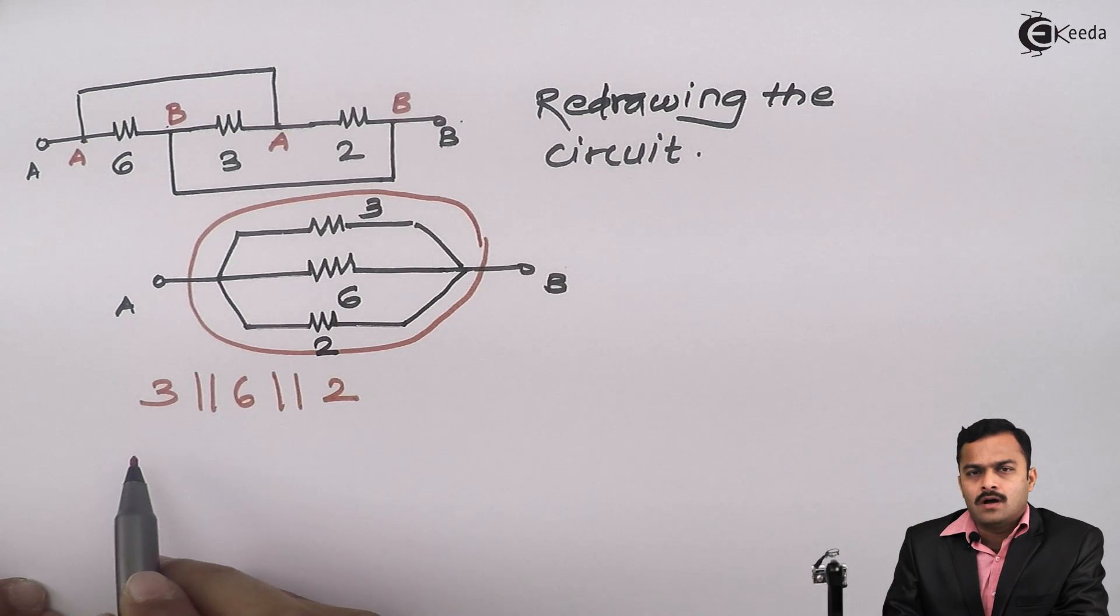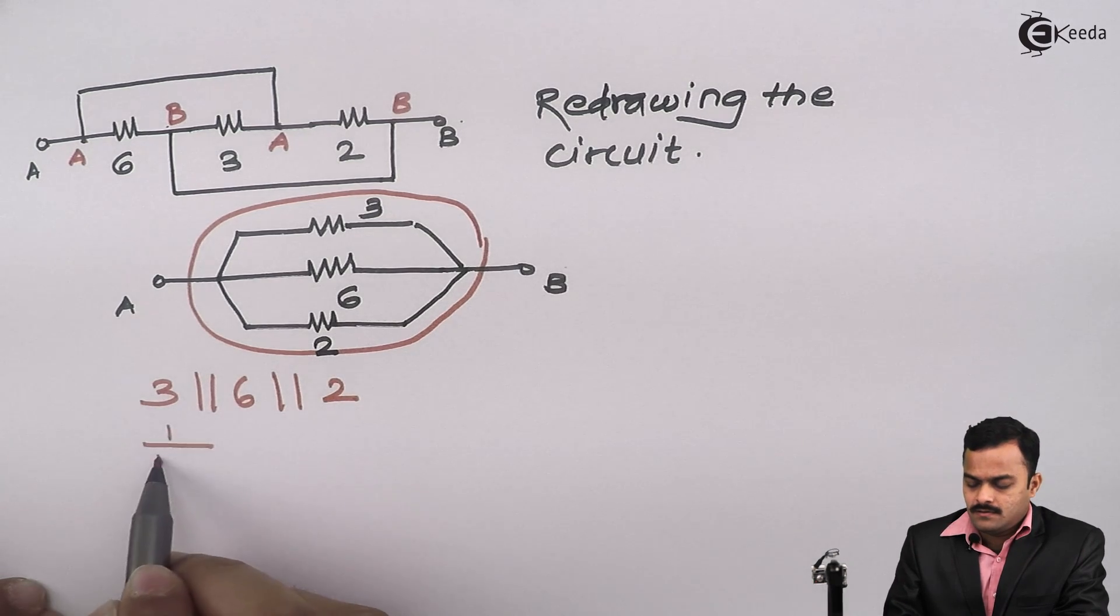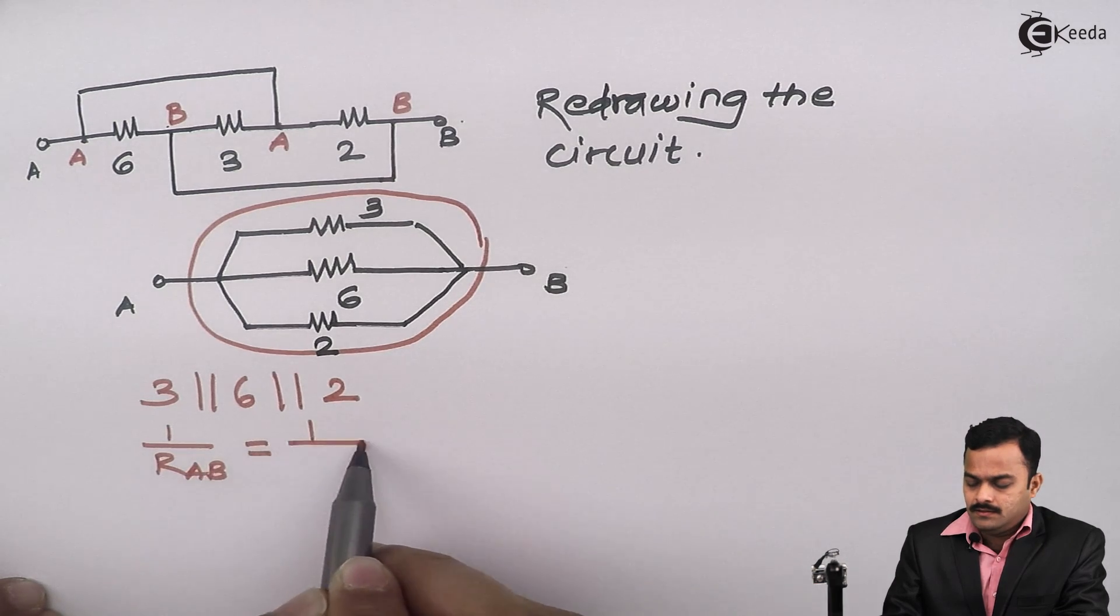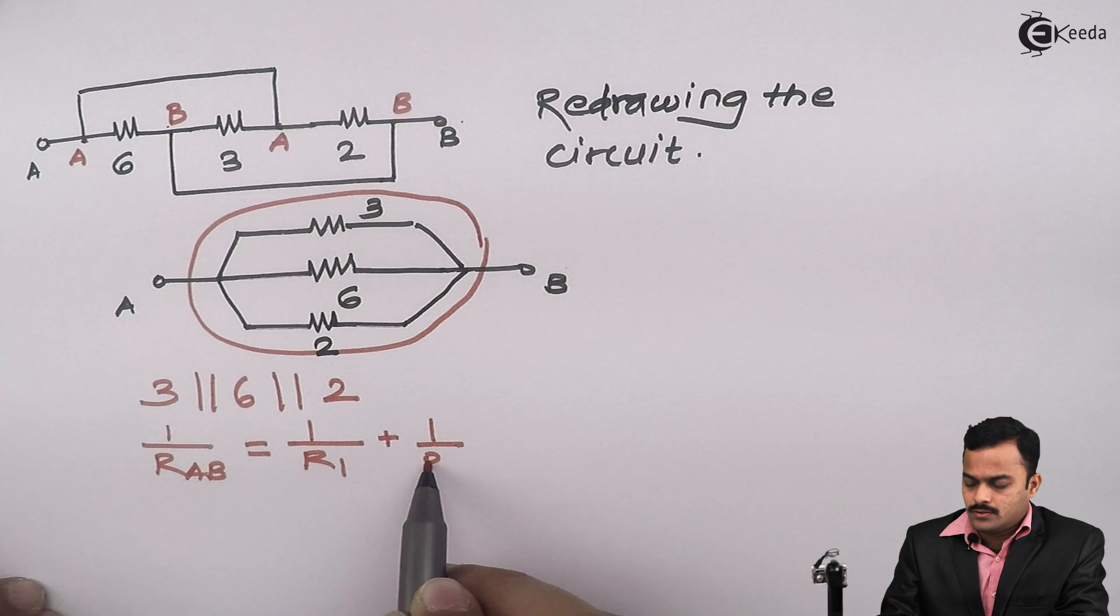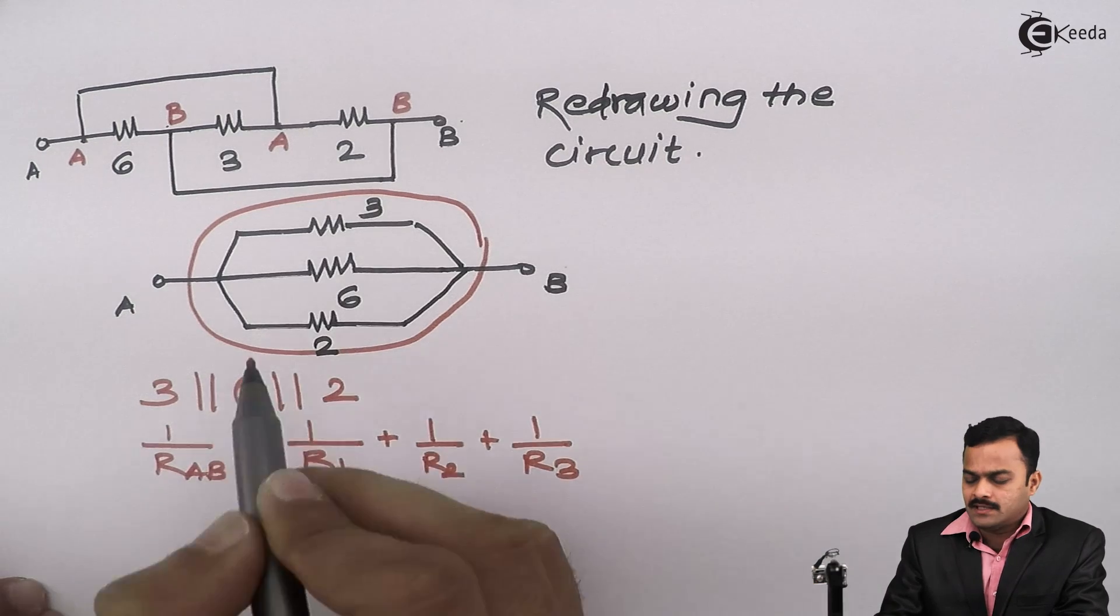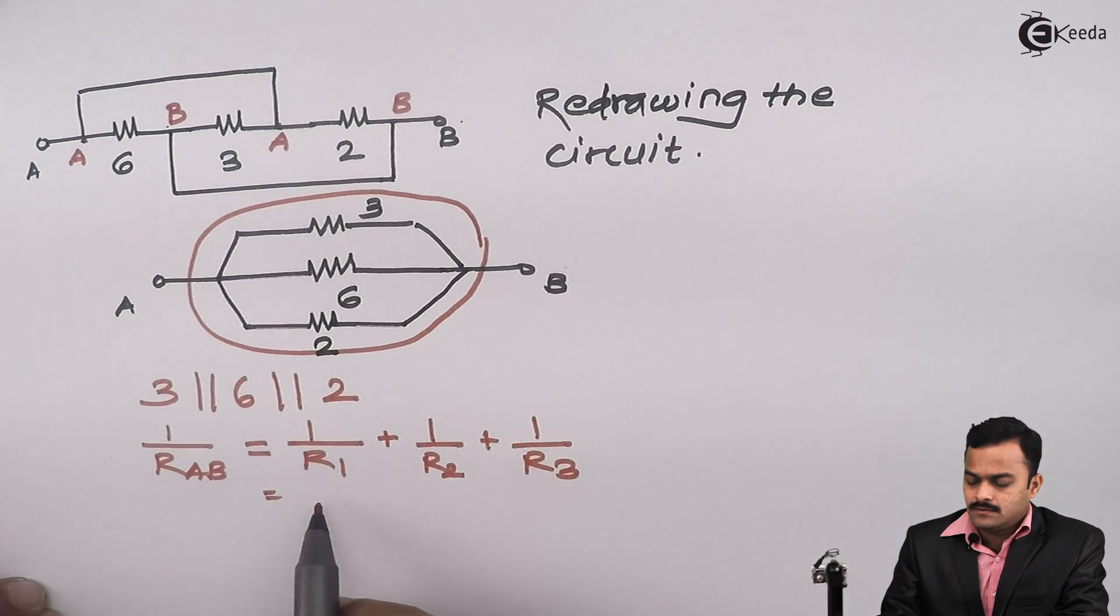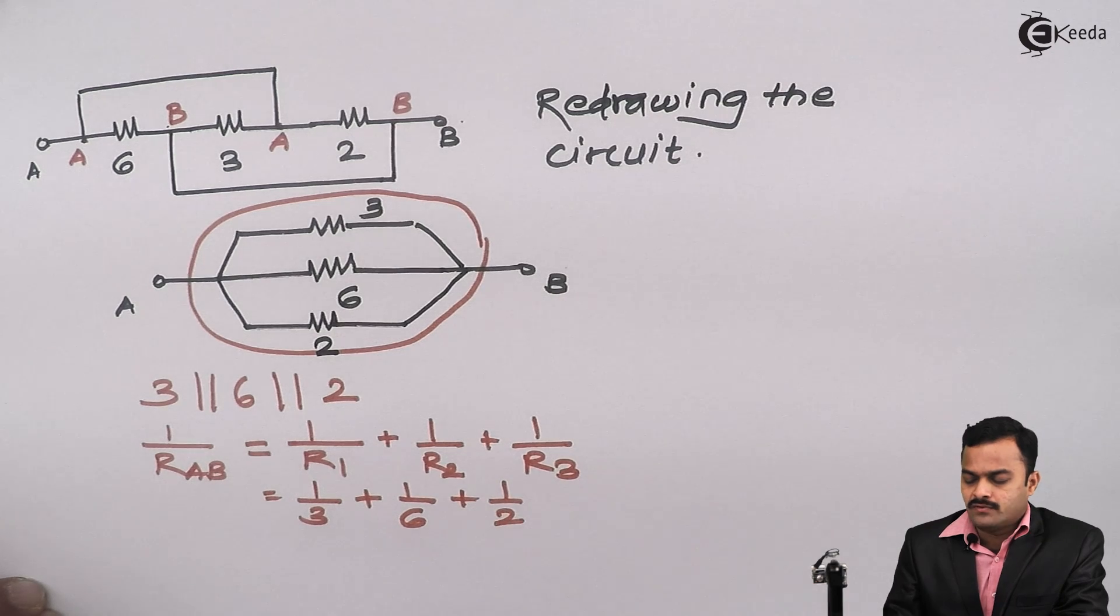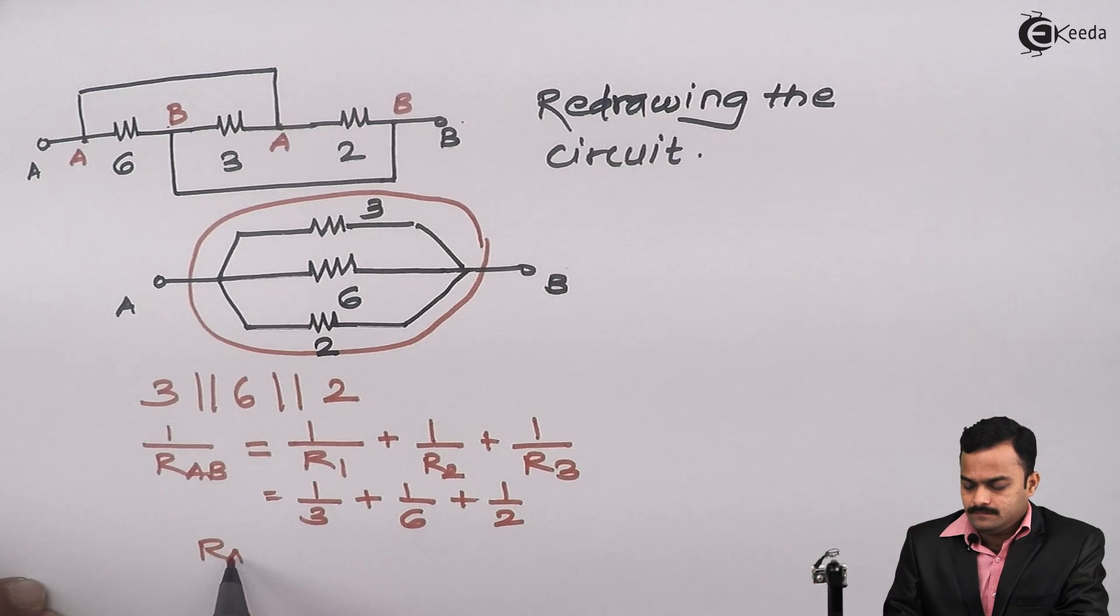And the equivalent is given as 1 upon R_AB equals 1 upon R1 plus 1 upon R2 plus 1 upon R3. I just named it R1, R2, R3, which are nothing but 1 by R: 1 by 3 plus 1 by 6 plus 1 by 2. And if you solve further, you will come to know the R_AB value will be equal to 1 ohm.